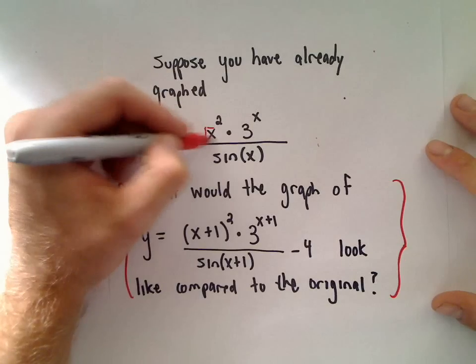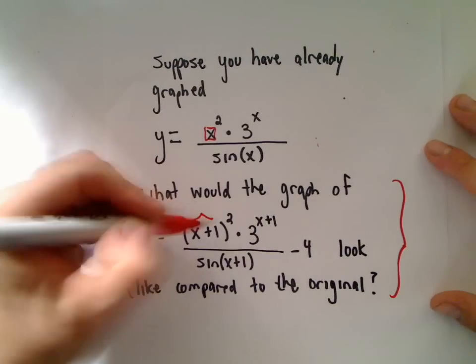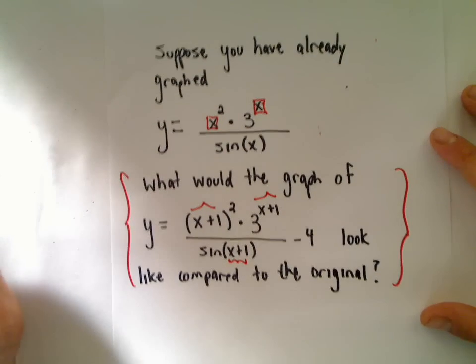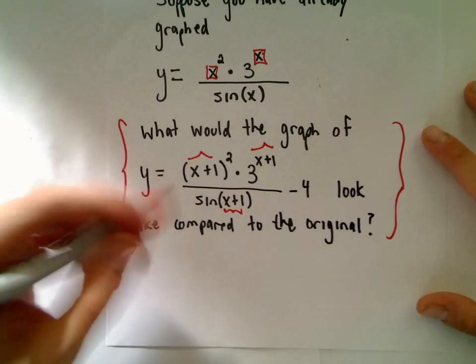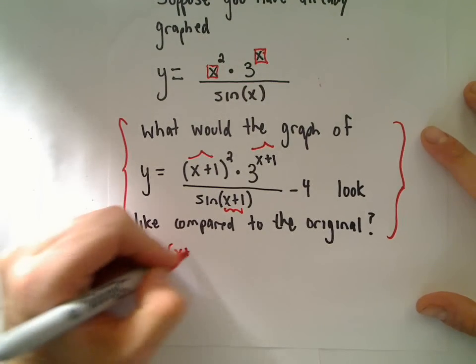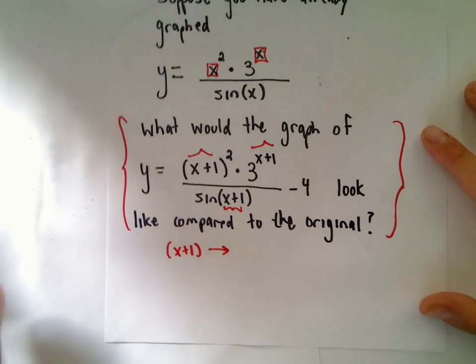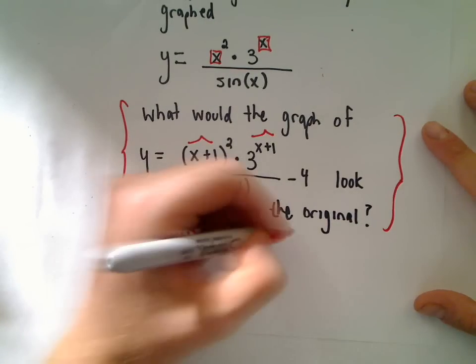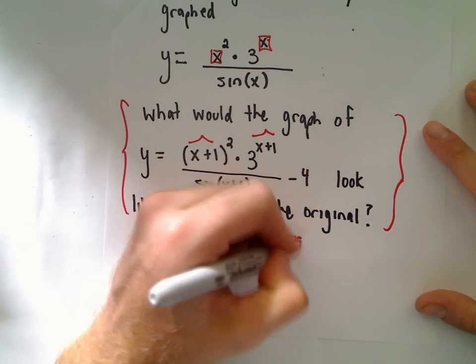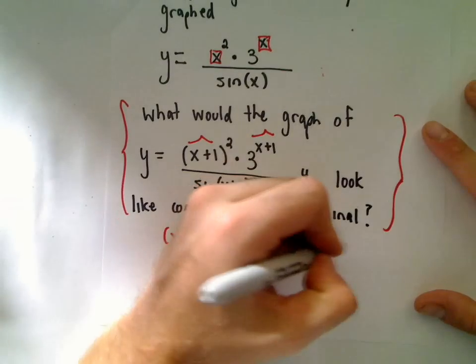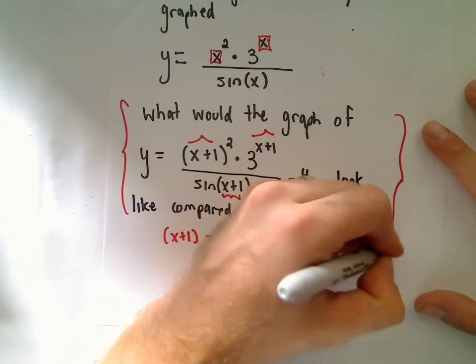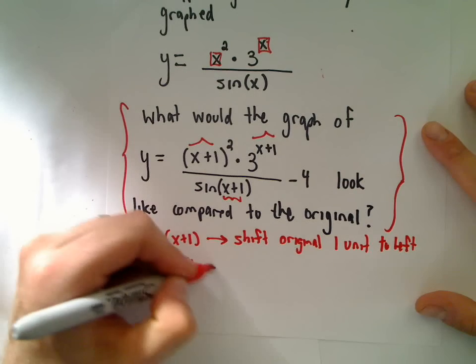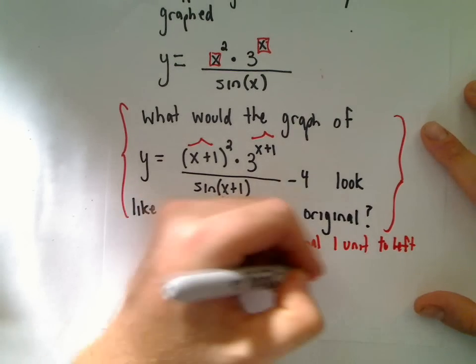Notice I took the original x's everywhere and plugged in (x+1). What does that x+1 do? Replacing x with x+1 shifts the graph one unit to the left. The minus 4 shifts the original down 4 units.